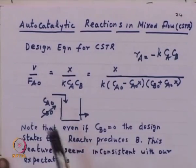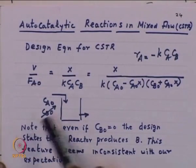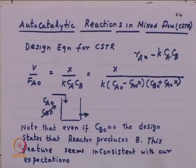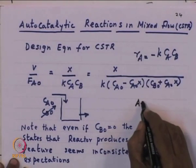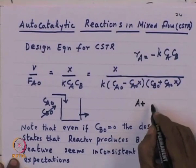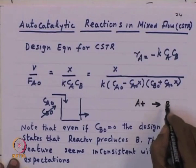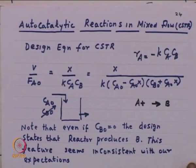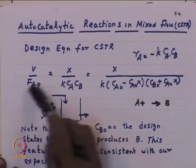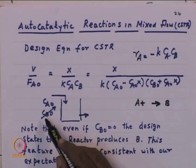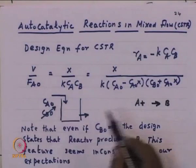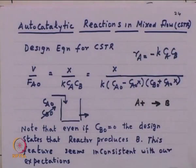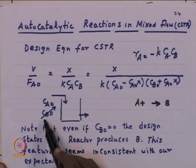What I have here is an equation for a CSTR where the reaction is occurring, where the rate function is given by C_A times C_B, and the reaction is autocatalytic: A gives B. Since it is autocatalytic, the rate depends on both A and B. The point I want to get across is that when you look at this equation, you find that even if C_B0 is zero, the size of the equipment is finite. It is not obvious why, even though you do not put C_B0 in the feed, the reactor gives a finite result.